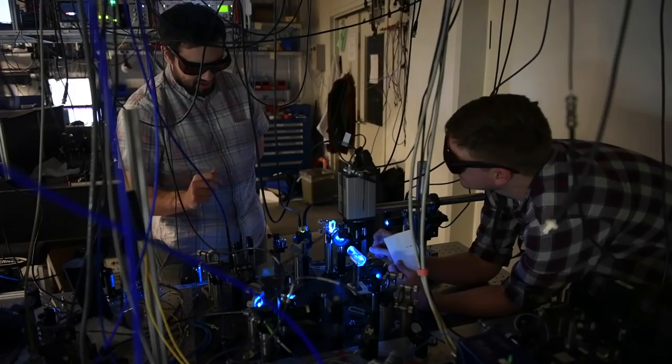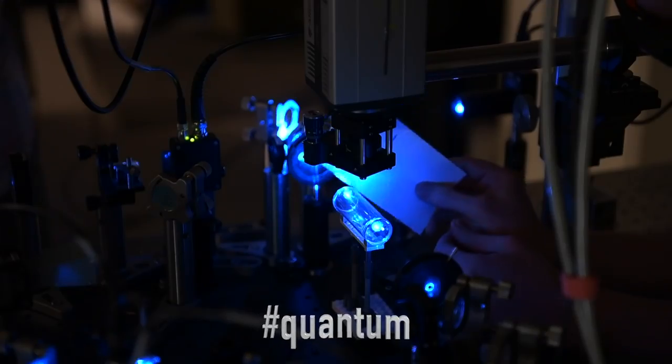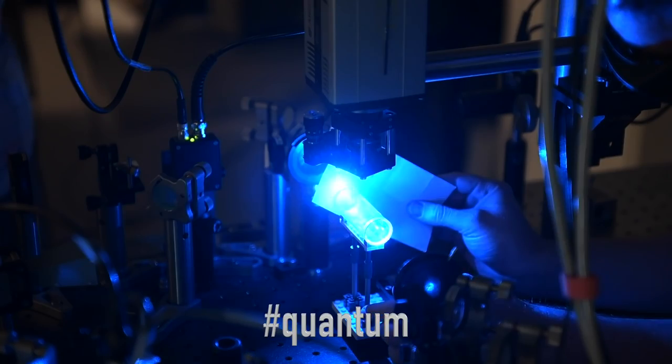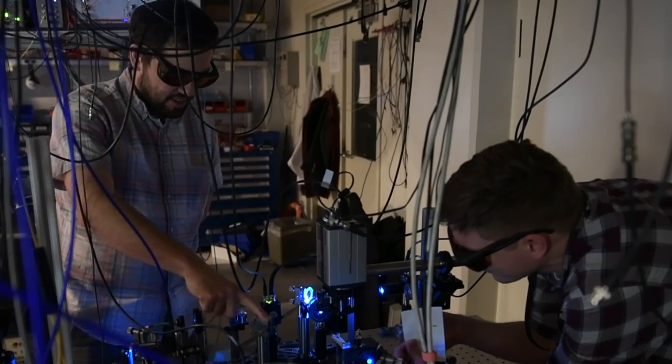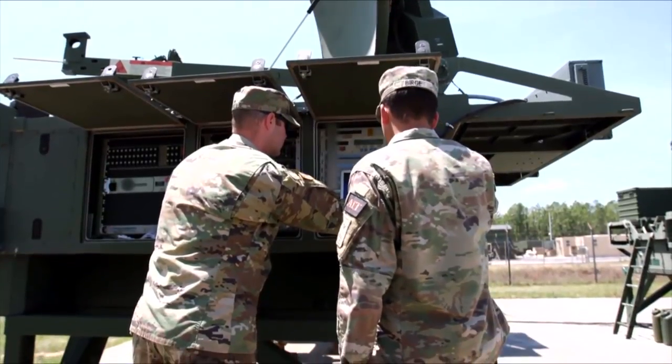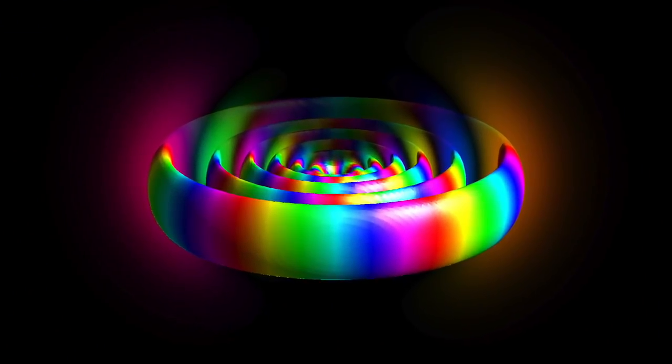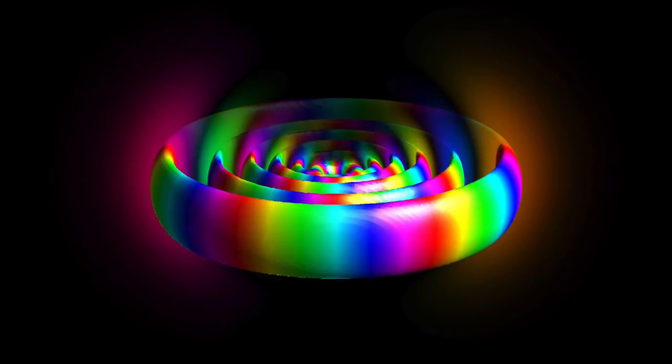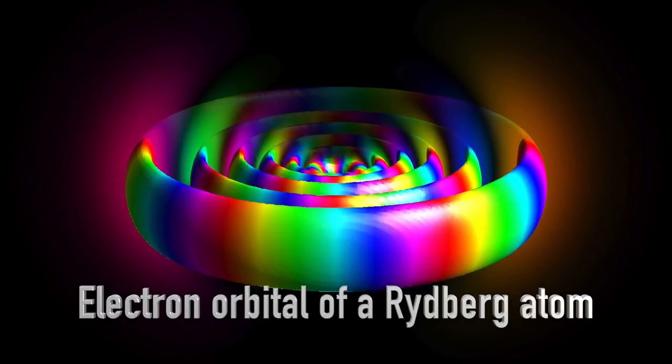Number 9. Army researchers make a giant leap in quantum sensing, building the world's first atomic antenna. We use antennas every day to transmit and receive data using electromagnetic waves. Army researchers used atoms prepared into exotic quantum states, known as Rydberg states, with super sensitivity to electric fields.